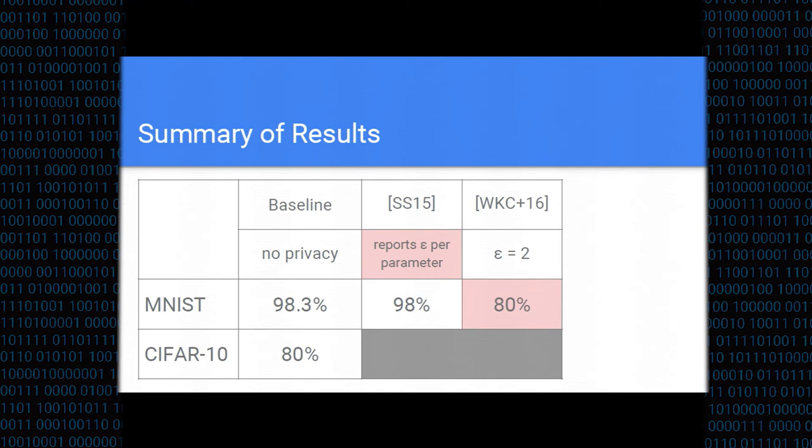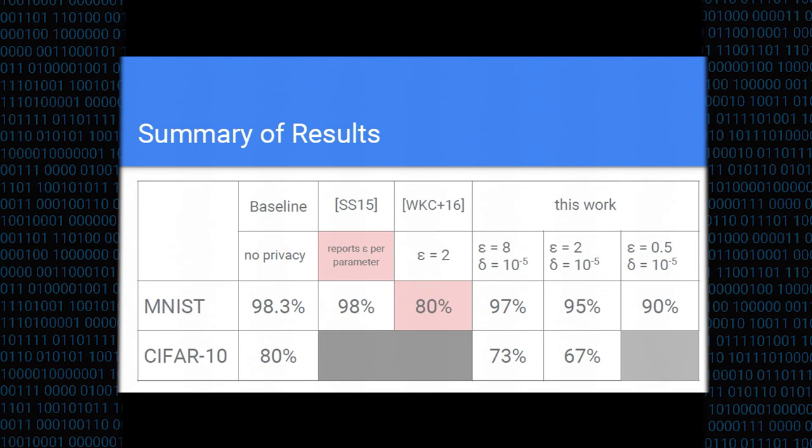In the prior work by Shokri from CCS last year, which achieved accuracy on MNIST of 98%, this prior work reported epsilon per parameter of the model. And there are tens of thousands or even hundreds of thousands of these parameters, so the total cumulative privacy loss was about 2,000. And again, we are talking about e to the epsilon in the actual adversarial advantage. And in the concurrent work by Wu et al, they achieved a much more decent epsilon of 2, but by training a convex model, which is a much more narrow class of models. And their accuracy on MNIST was 80%, a long way off of the existing state of the art.